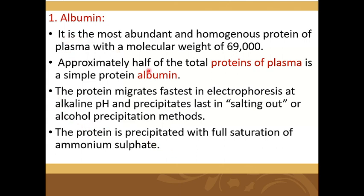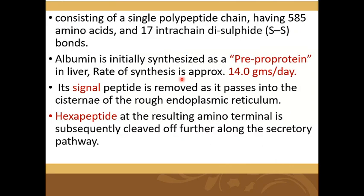The protein is precipitated by full saturation ammonium sulphate. On electrophoresis, when electric current is applied, albumin moves very fast and precipitates last in the salting out or alcohol precipitation method. It consists of a single peptide chain of 585 amino acids with 17 disulfide linkages between cysteine residues.